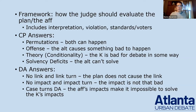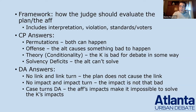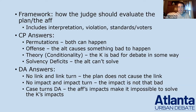The third category is disadvantage answers. Since the K has similar structural parts to a disadvantage — the link and the impact — you can answer the link and impact as if answering a disadvantage. This takes the form of no link or a link turn: the plan either doesn't cause the link or in fact prevents the link from happening. Then no impact or an impact turn: the impact is not that bad or is actually good. A third argument is case turns the critique — explaining why the affirmative impacts happening makes it impossible to solve or prevent the impacts of the criticism.